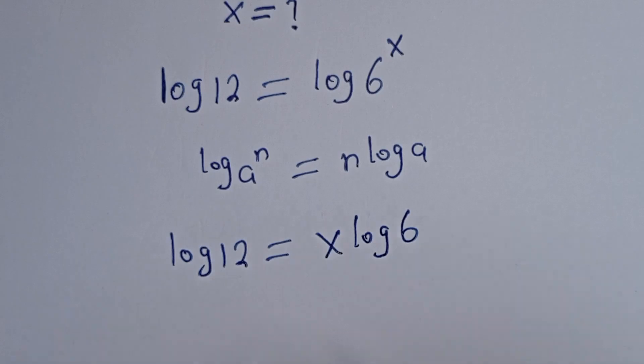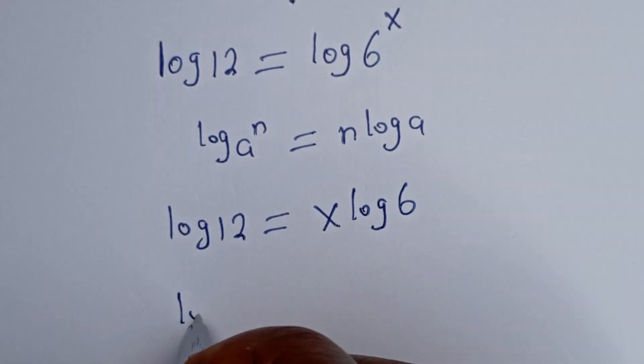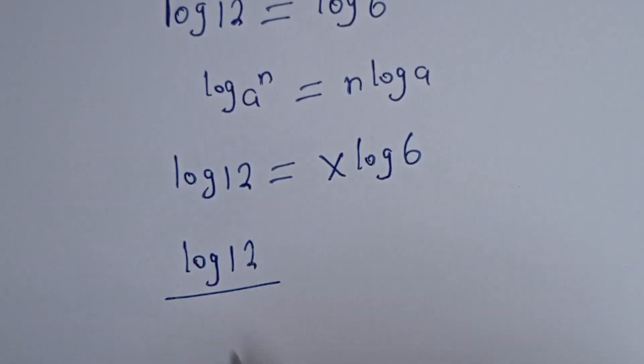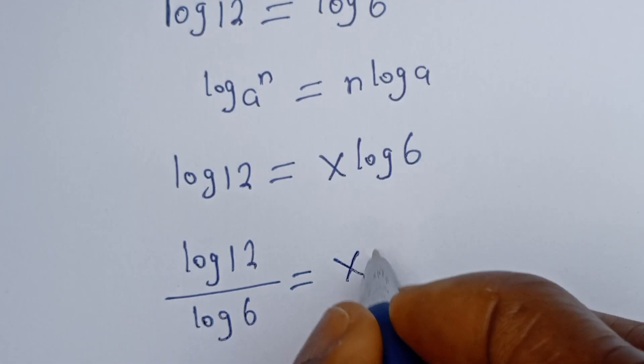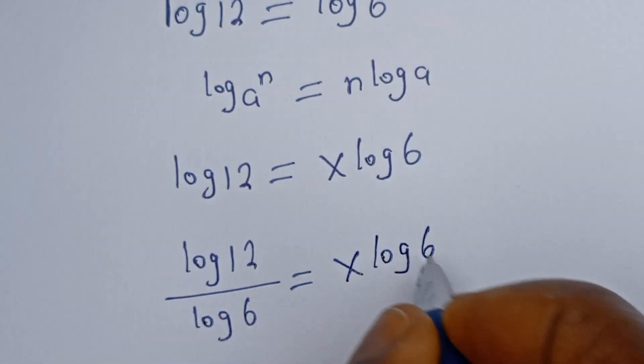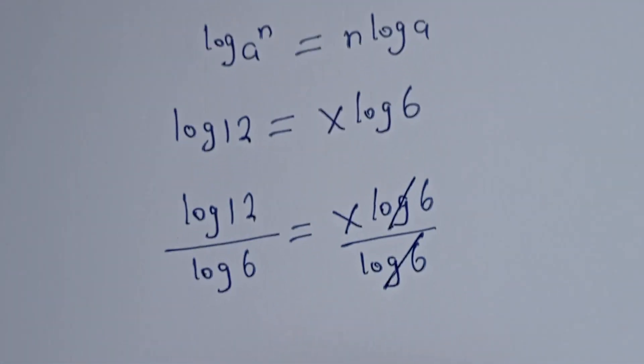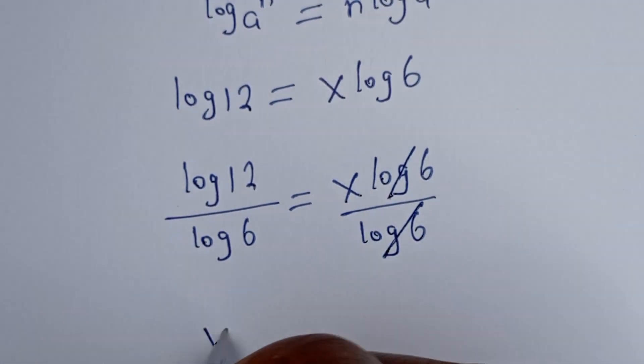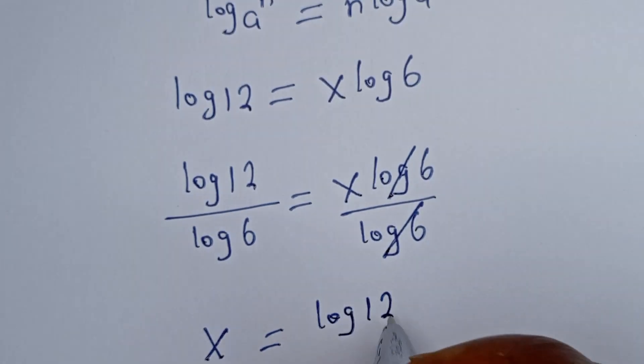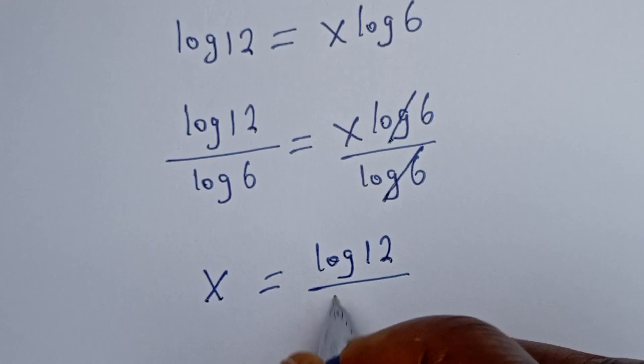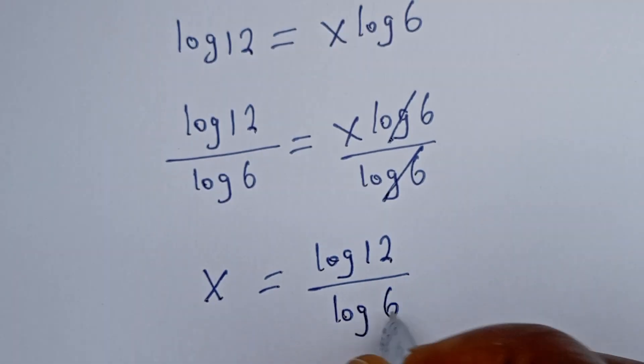Now let's divide both sides of this equation by log 6. We have log 12 divided by log 6 is equal to x log 6 divided by log 6. We will cancel this. x is equal to log 12 divided by log 6.